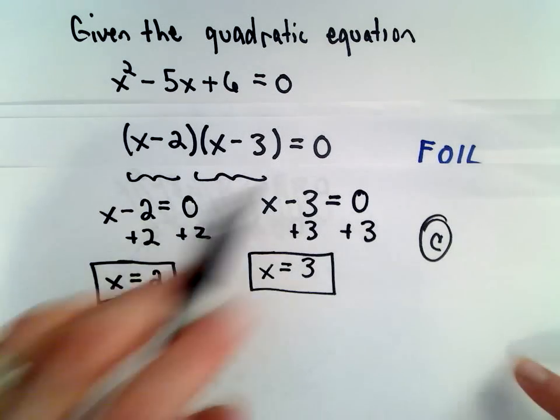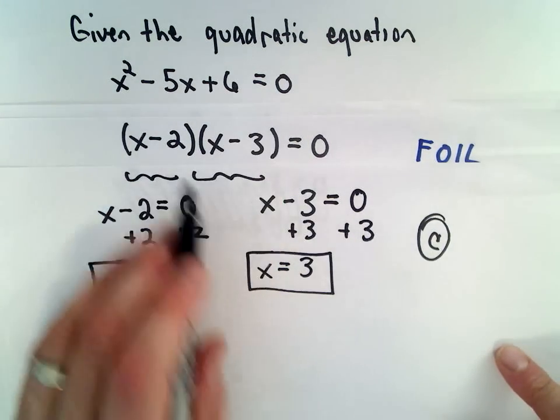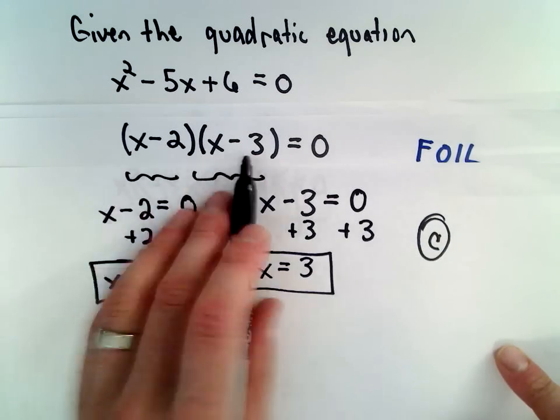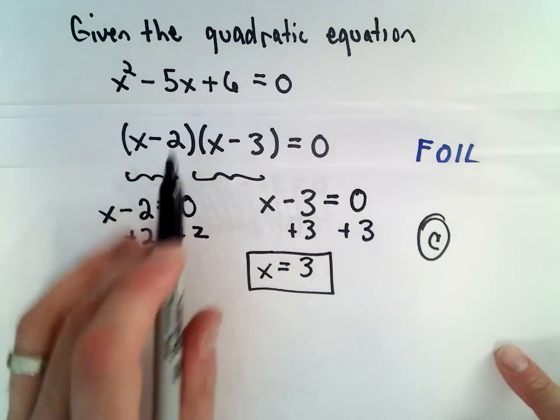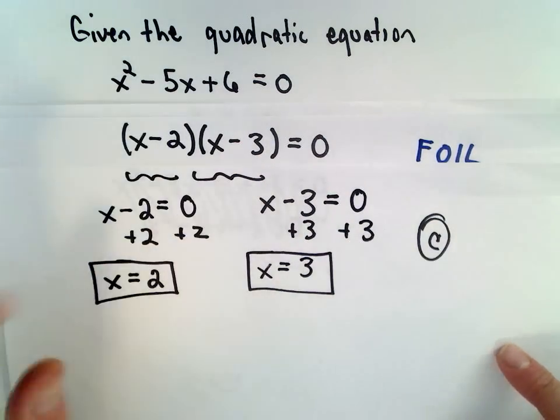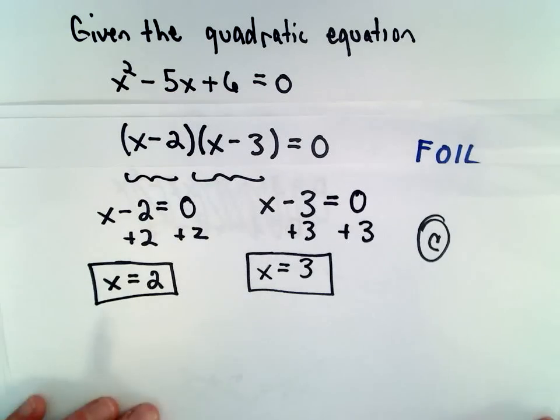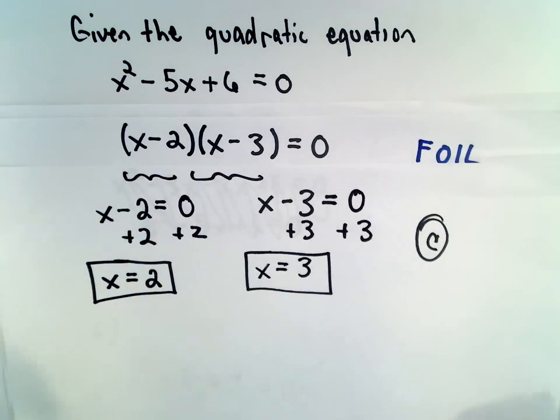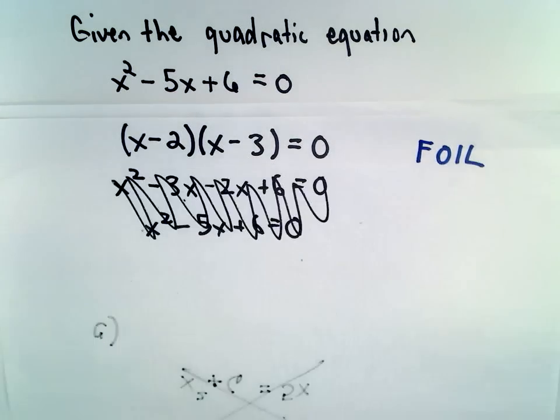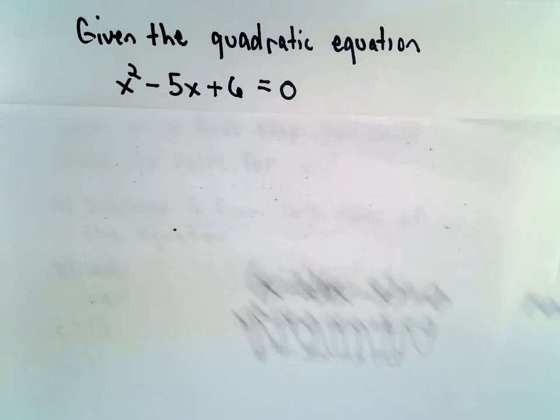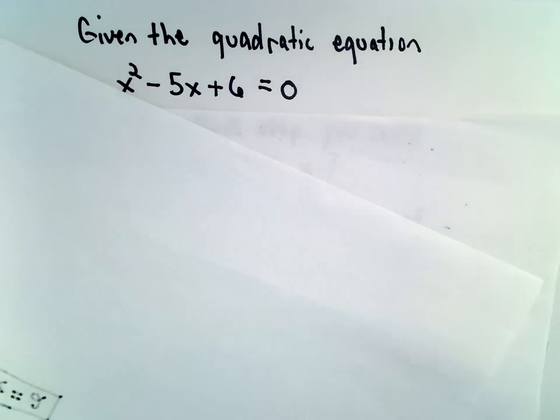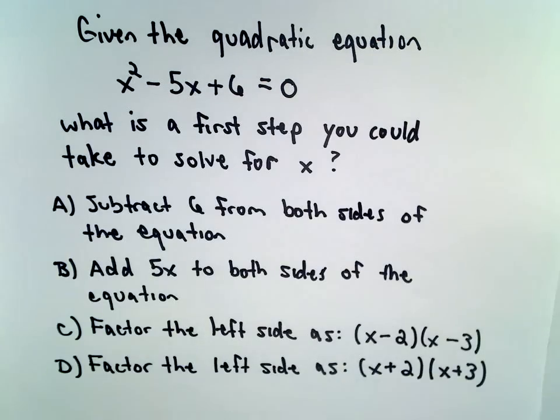So it looks like part C is the correct way to go. And again, this is the procedure. You want one side to be 0. If you can factor it easily, then that's a great thing to do. Not all quadratic equations factor nicely and easily, so you may have to use the quadratic formula. If it doesn't factor nicely, I would immediately jump to the quadratic formula. But again, that's one more formula you've got to memorize.